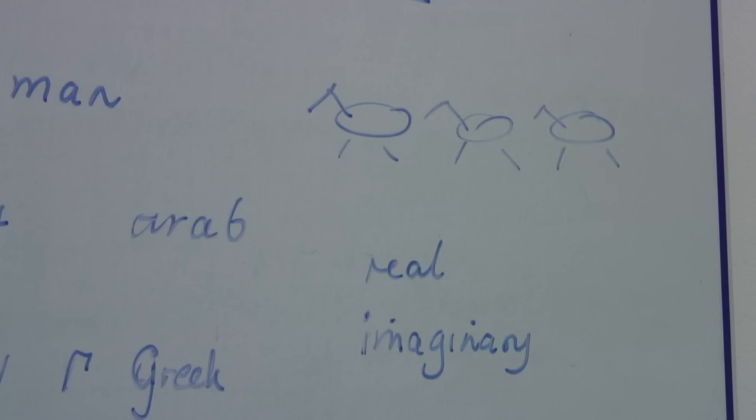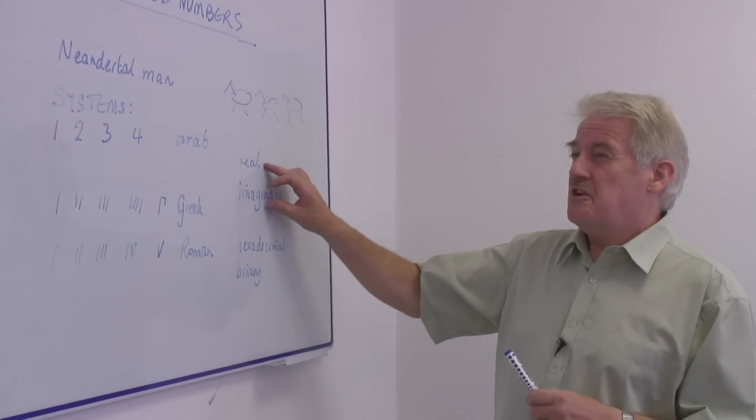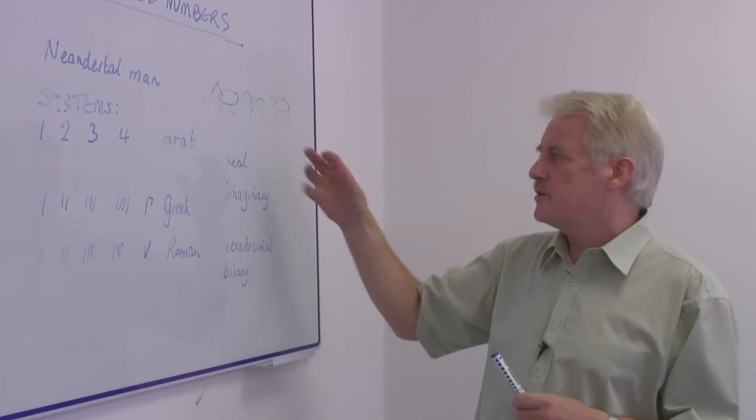So in the twentieth century, and now in the twenty-first century, we have developed the ideas of real numbers, imaginary numbers, these are new number systems.